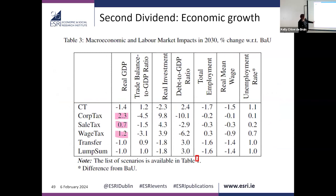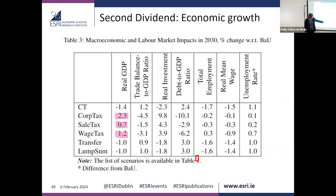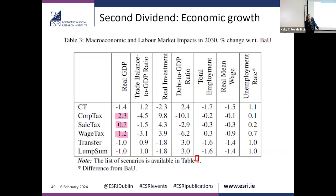Looking at the second dividend — economic growth — in the pure carbon tax scenario there's a negative impact on real GDP. When we recycle revenues to reduce corporate tax, sales tax, or wage tax, the real GDP impact becomes positive — highest for the corporate tax option. However, when revenues go to household transfers, the GDP impact is still negative, though less negative than the pure carbon tax scenario. There's also a dampening impact on total employment across scenarios.